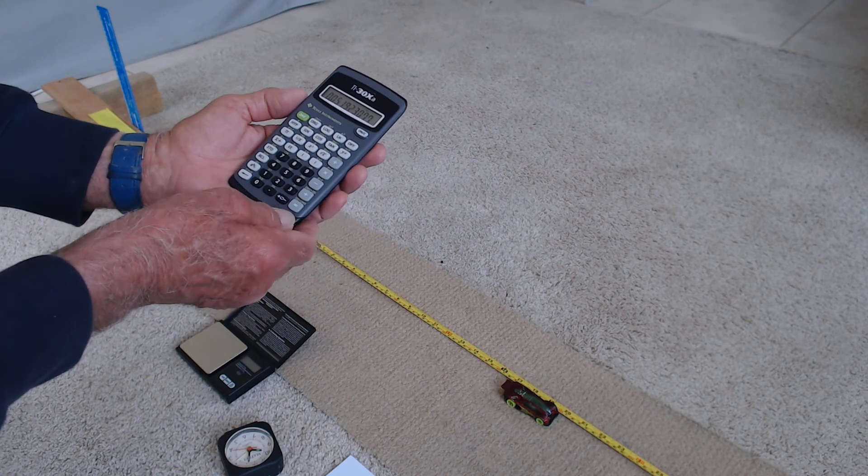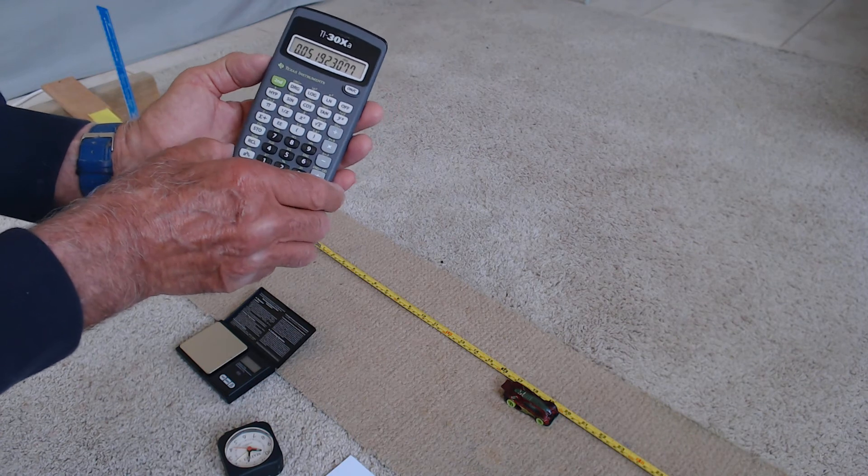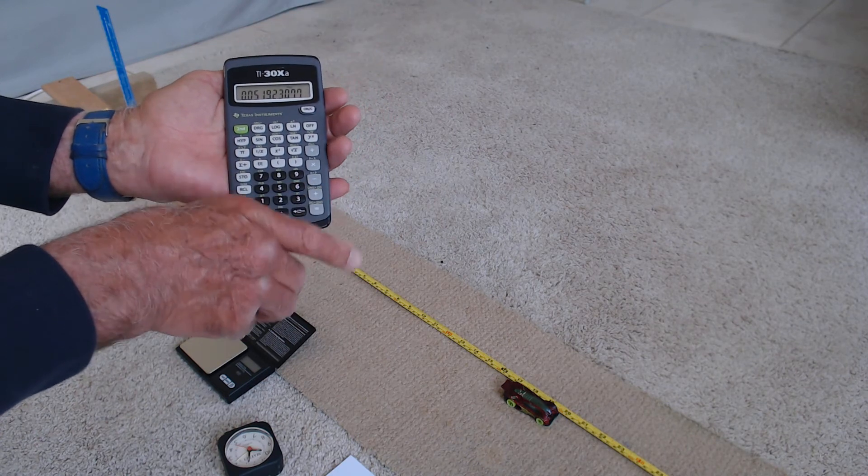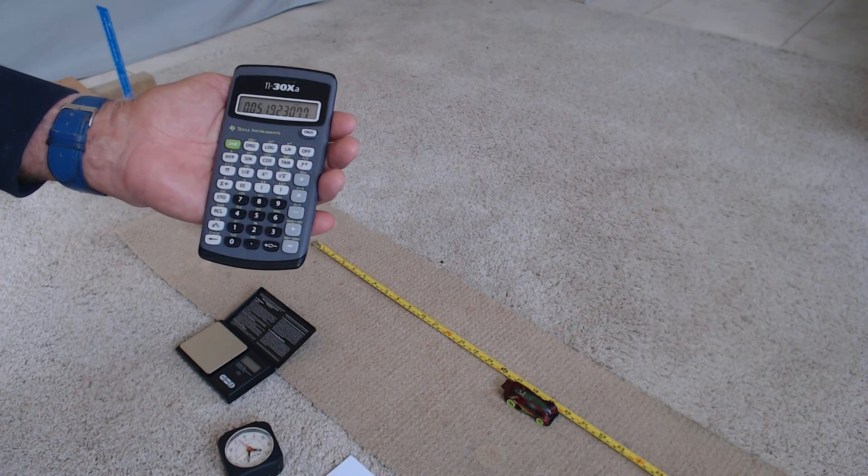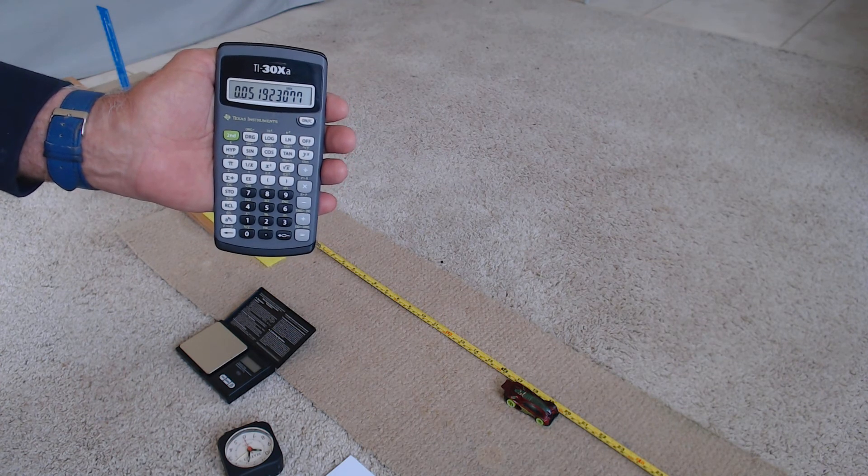we get a value for the braking force of 0.05 Newtons. This is the force between the carpet and the car during braking.